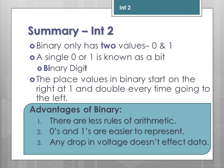To summarize for Int2: you are expected to know that binary only has two values, which are 0 and 1. A single 0 or 1 inside a computer system is known as a bit, standing for binary digit. The place values in binary start on the right at 1 and double every time going to the left. You are expected to be comfortable up to and including 8 bits, which means the largest number you can represent decimally is 255. You also have to know the three advantages of using the binary system: 1) there are less rules of arithmetic; 2) 0s and 1s are easier to represent; 3) any drop in voltage does not affect the data.